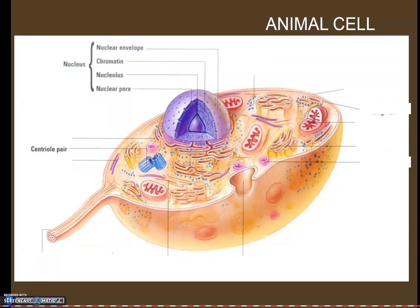We have a centriole pair and the centriole pair is involved in cell division. When cell division happens, these two different centrioles will migrate to opposite poles of the cell and essentially pull the cell apart.